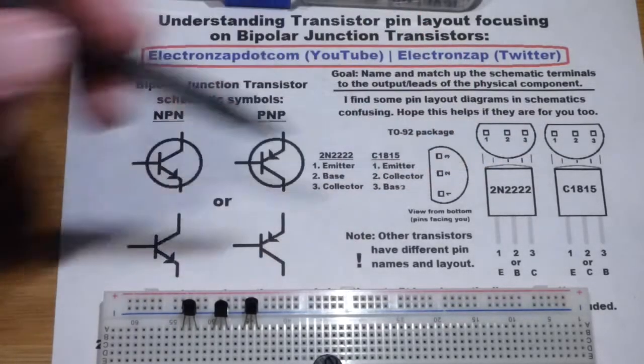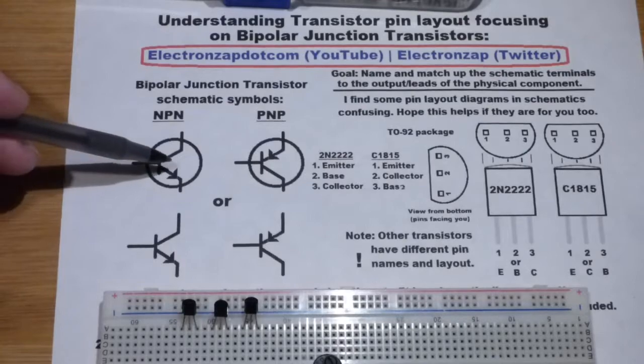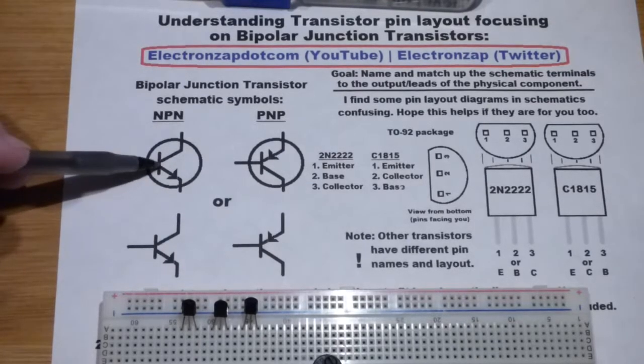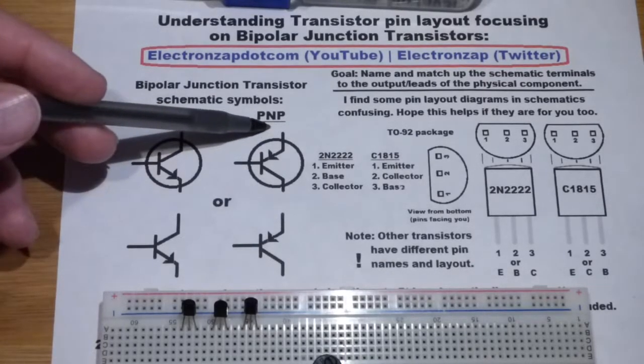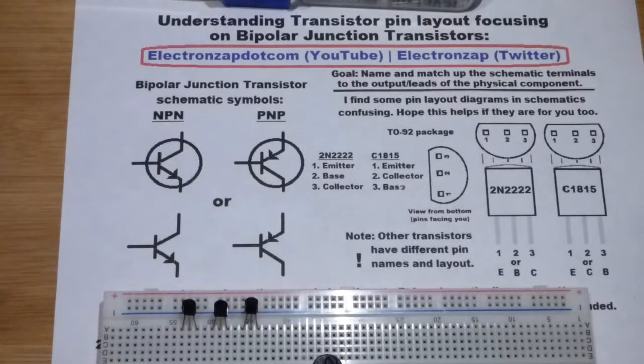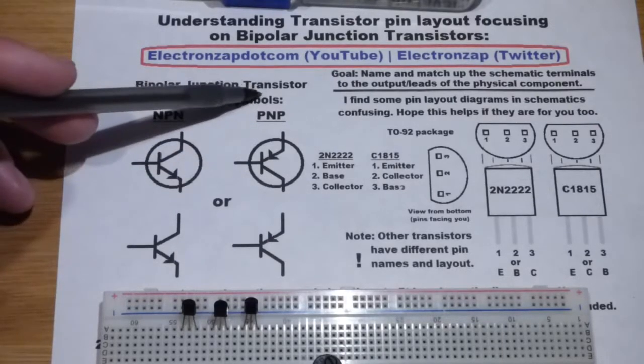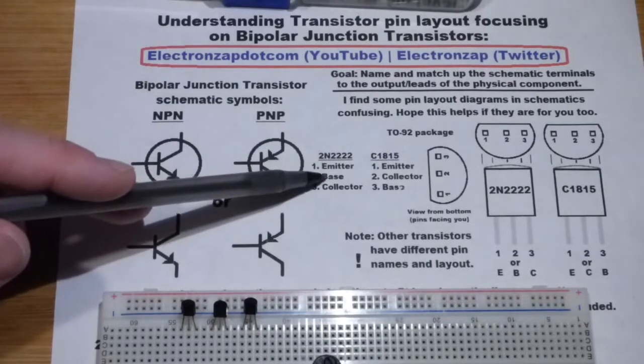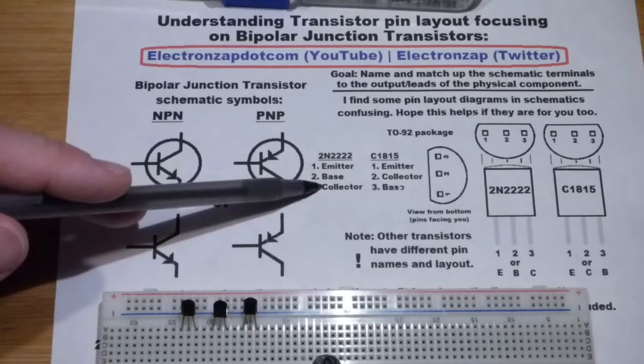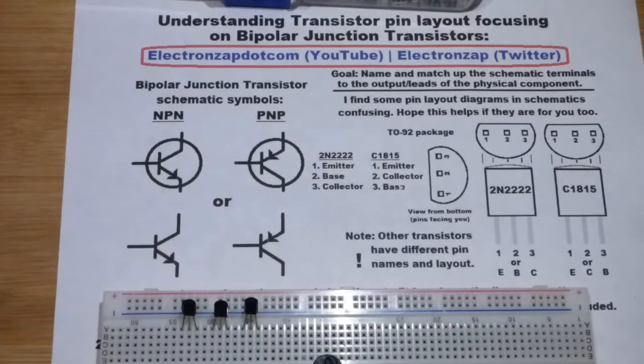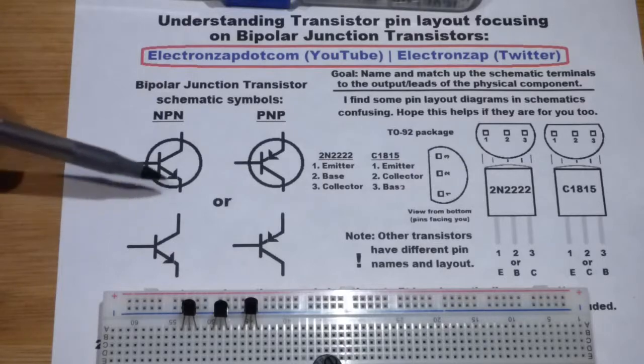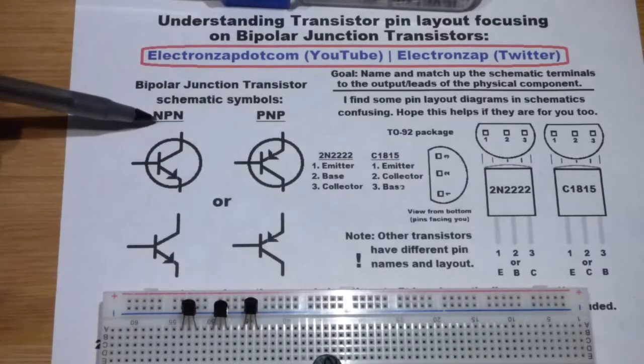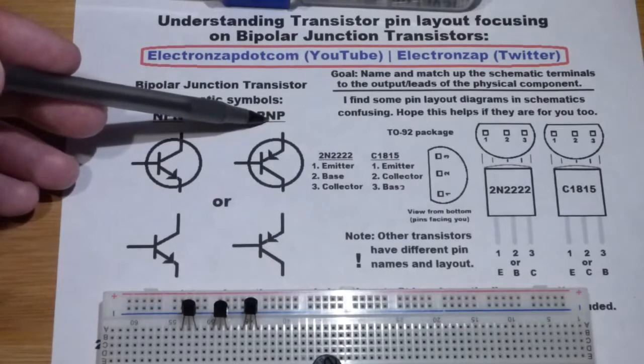Normally, we look at transistors in schematic form, and I have the two generic ways that we show this. There's an NPN type and a PNP type transistor. We're only focusing on bipolar junction transistors in this video. Bipolar junction transistors all have an emitter, a base, and a collector. If you find the datasheet for a transistor and it has different pin names, it's a different type of transistor. But bipolar junction transistors come in either NPN form or PNP form.